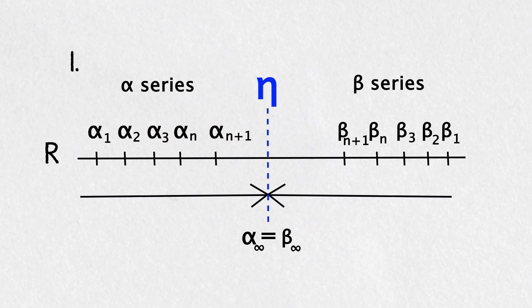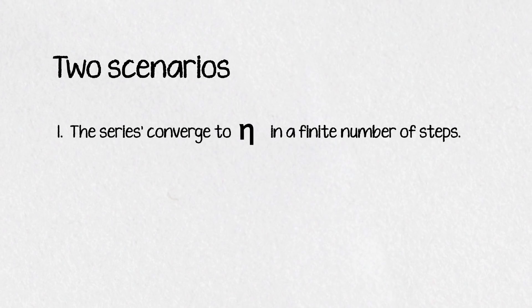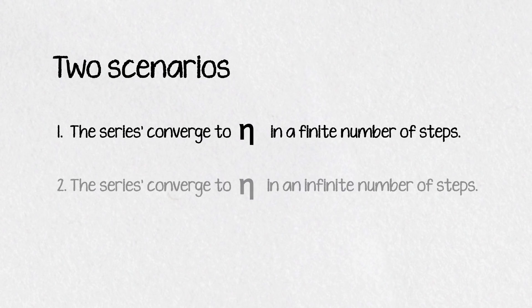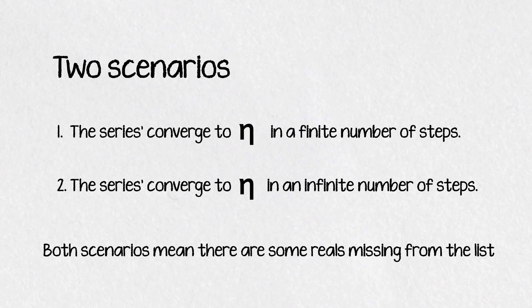Now we're going to show two scenarios. One where the series converge to eta in a finite number of steps and one where it takes an infinite number of steps, and then show that both scenarios mean there are some reals missing from the list.